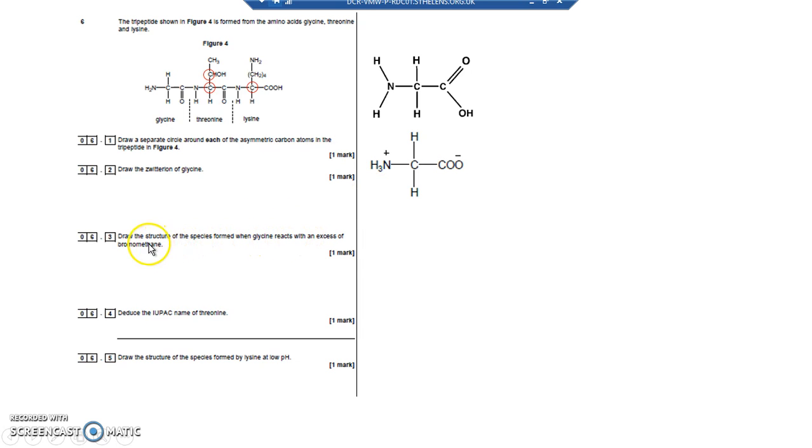Draw the structure of the species formed when glycine reacts with an excess of bromoethane. It's forming a quaternary ammonium salt in four different, one at a time, four different additional elimination reactions. There's a lone pair of electrons on that N which would attack the C.